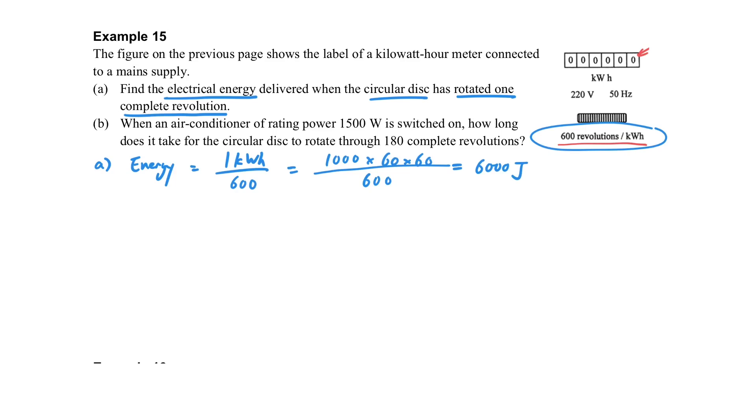Then we know that each rotation will have this amount of energy passed by. If the air conditioner has a power of 1500W and it rotates for 180 complete revolutions, then how much energy does it use and how long does it take to use this amount of energy?